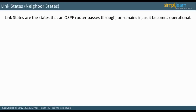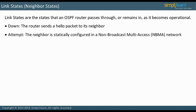Link states are the states that an OSPF router passes through or remains in as it becomes operational. Before a router participates in the OSPF process, it is considered down. Once it is enabled, the router sends a hello packet to its neighbor. The ATTEMPT state occurs only when the neighbor is statically configured and in a non-broadcast multi-access, NBMA, network. An interface is in the ATTEMPT state after it has sent a hello, but before it has received a hello from its neighbor.